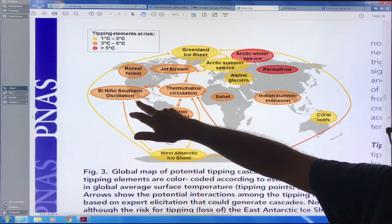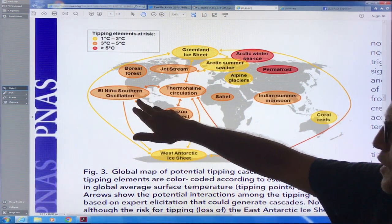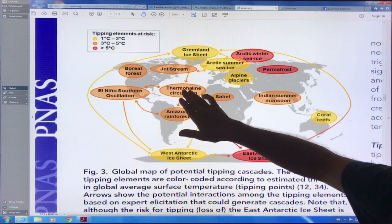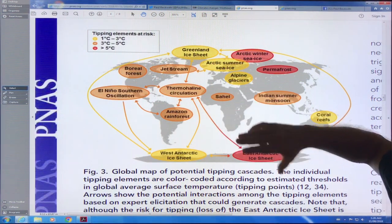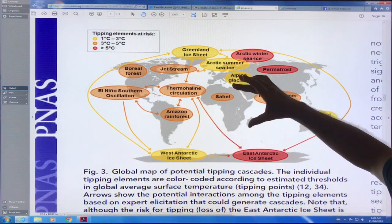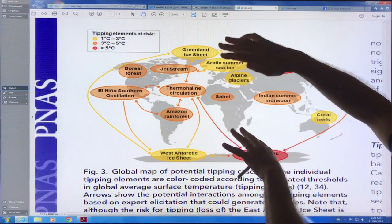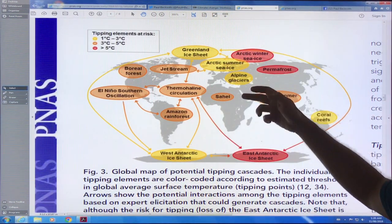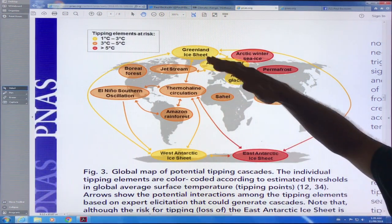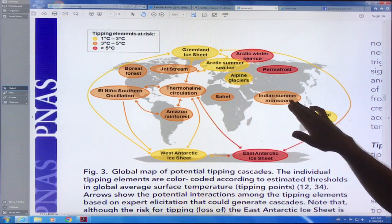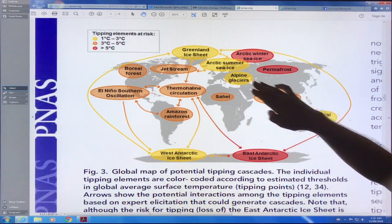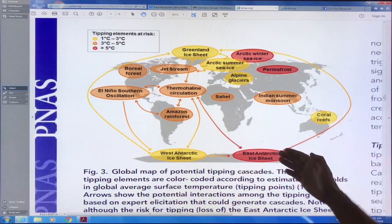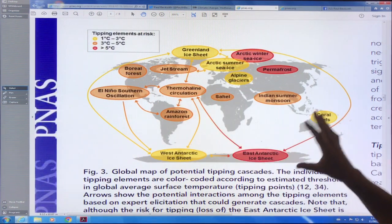I'm not sure why they have jet stream at three to five degrees. The jet stream changes have been significant already, greatly ramping up the incidence of extreme weather events. Boreal forest - we're seeing all of these fires in the boreal forest already. El Niño Southern Oscillation or ENSO changing nature, happening more frequently. Amazon rainforest dieback, thermohaline circulation, ocean circulation slowing down. The Sahel drying out as the intertropical convergence zone shifts location. The Hadley cells are expanding - those are like the gears. The Hadley, Ferrel, and polar cell. The Hadley is expanding as the earth is warming. The Indian monsoon changing character. Greater than five degrees, they have permafrost, Arctic winter sea ice and East Antarctic ice sheet.